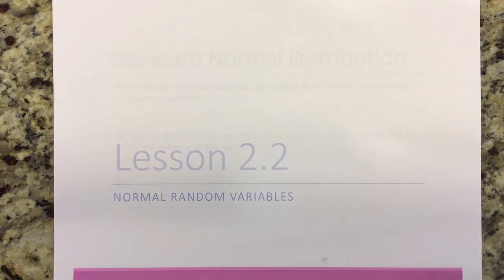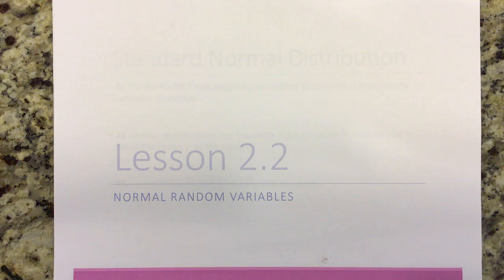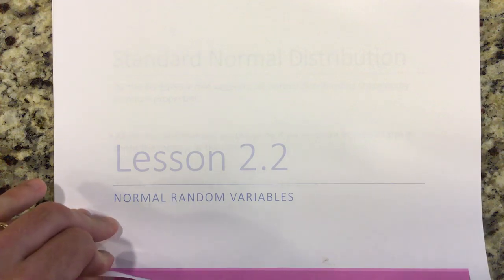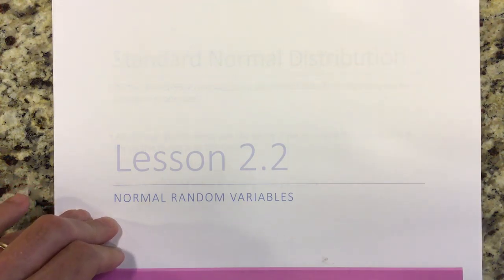Hello, AP Stats students, and welcome to another exciting day of distance learning. Today we're going to do Lesson 2.2, Normal Random Variables. Last lesson, you learned about the empirical rule and the normal distribution. A question should have arisen when doing those problems: what if something isn't exactly one, two, or some integer number of standard deviations away from the mean? Does that mean we can't do the problem? The answer is no, and that's what we're going over today.